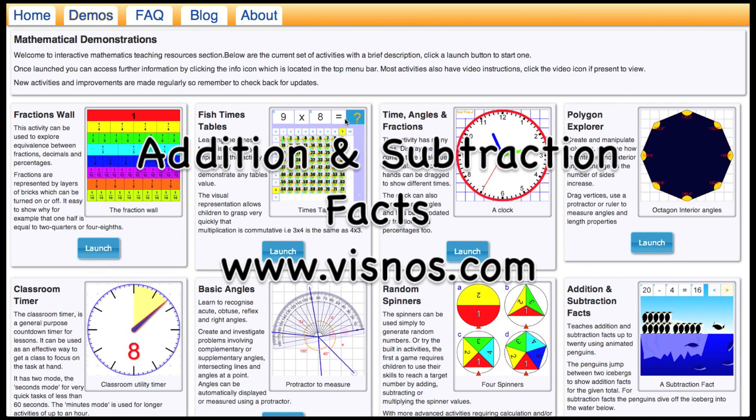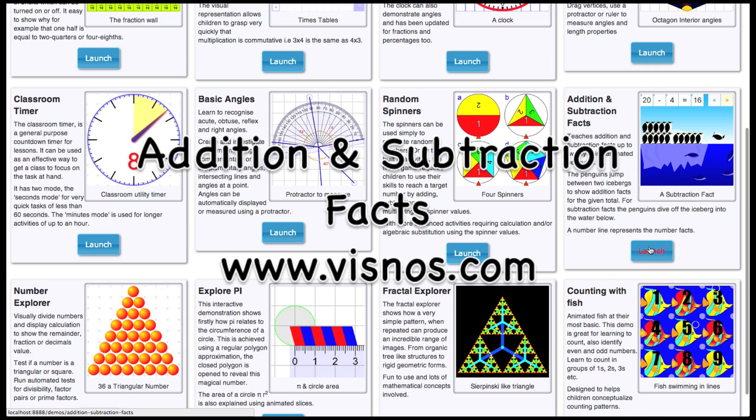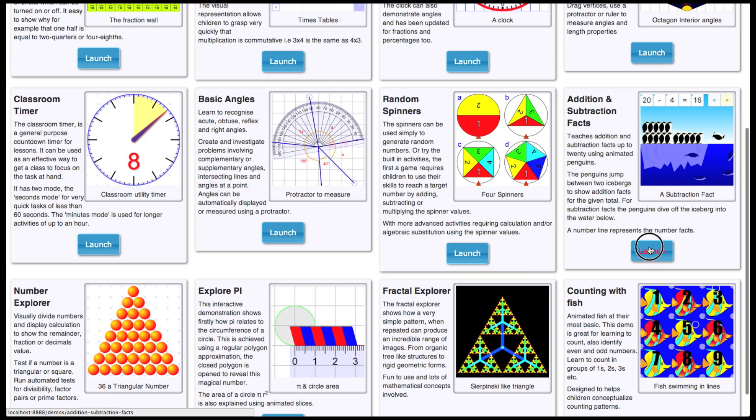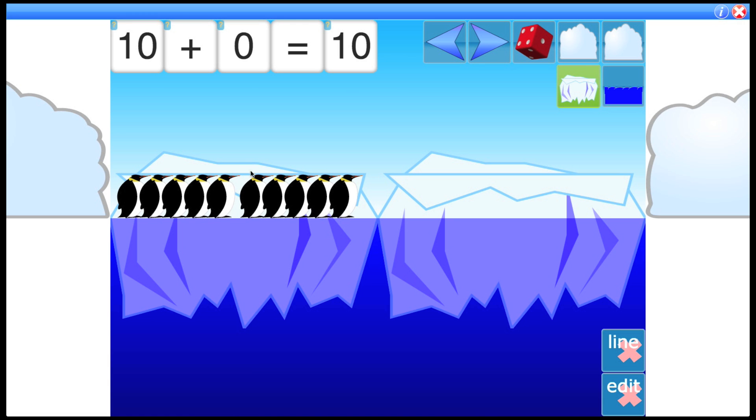This interactive maths activity can be found at visnos.com. In this tutorial I'm going to be talking about addition and subtraction facts, which I'm going to launch from here. As you can see, the interface opens and we have a number fact, in fact an addition fact, which is 10 plus 0 equals 10.